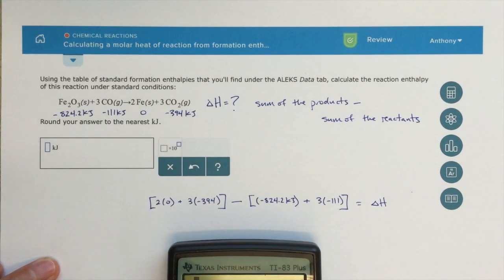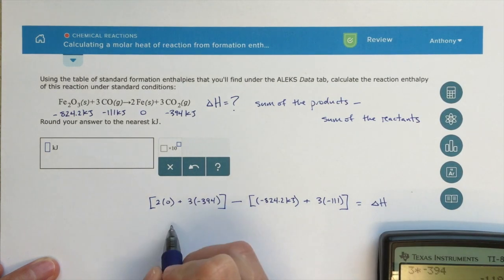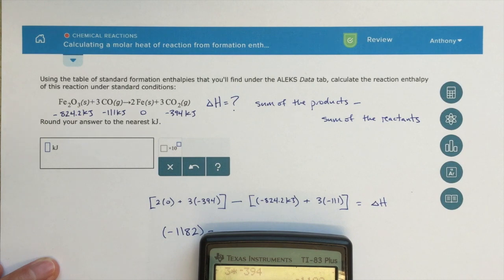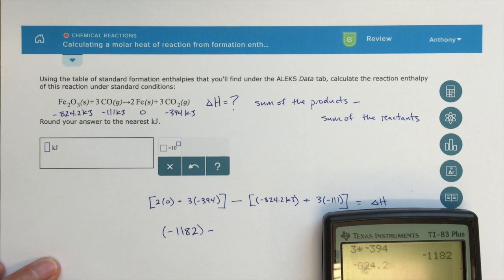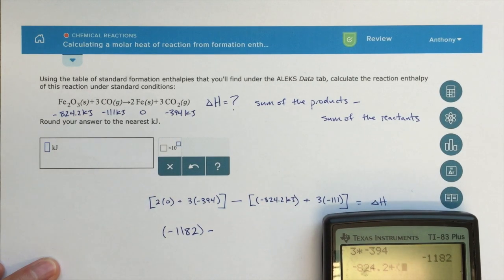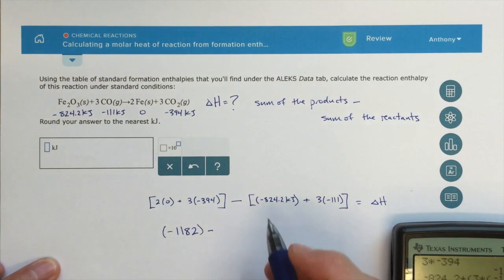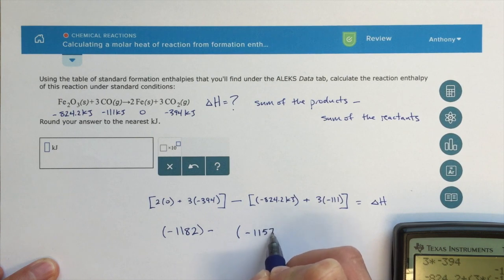So let's go ahead and do some calculations here. So 3 times minus 394. So over here, this is going to be minus 1182. And then that's going to be minus this sum over here. So then we're going to have minus 824.2. So here's, you can see, minus 824.2 plus 3 times minus 111. So that gives me a value over here of minus 1157.2.